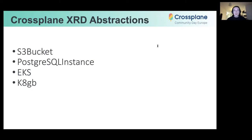We use Crossplane composite resource model and associated composite resource definitions to create our very own platform and provide abstracted resources to our technical customers. So the main XRDs, the composite resource definitions that we operate, are S3 bucket to provide specially configured object storage, PostgreSQL instance, EKS clusters, and K8GB for global load balancing.